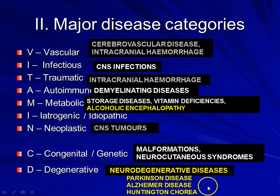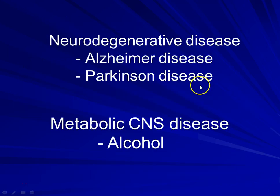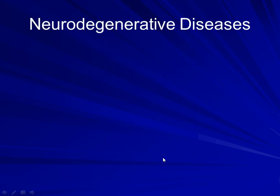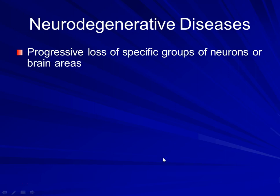Only several of them: Parkinson's, Alzheimer's, and Huntington's chorea. So this in a nutshell is what we're going to be talking about — neurodegenerative and metabolic CNS disease, specifically alcohol-related brain disease. For neurodegenerative diseases, these are defined as a spectrum of conditions where there is progressive loss of specific groups of neurons or specific areas in the brain.